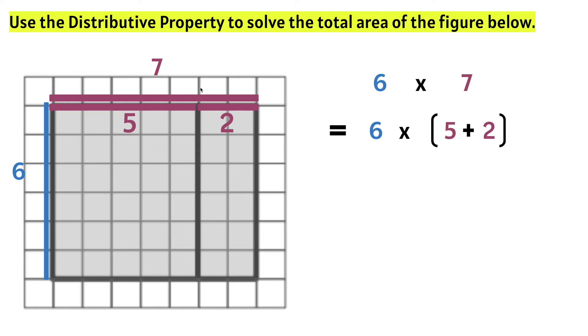Now let's go ahead and distribute or share since we're using the distributive property. We need to distribute the six to the five and we need to distribute the six to the two. Take a look here. We have six, which is the length, times five. And we have six again times two. This is six times two. And this is six times five. So this rectangle here represents six times five. And this rectangle here represents six times two.